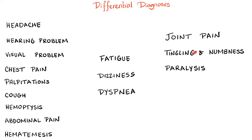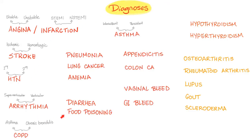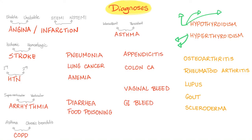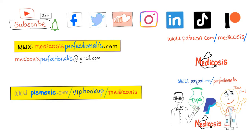You also need to know each individual diagnosis by heart — everything about angina, infarction, strokes (ischemic and hemorrhagic), hypertension (primary and secondary), arrhythmias (supraventricular and ventricular), COPD, asthma, chronic bronchitis, pneumonia, lung cancer, anemia, appendicitis, colon cancer, diarrhea, food poisoning, vaginal bleed, GI bleed, hypothyroidism and hyperthyroidism, osteoarthritis, rheumatoid arthritis, lupus, gout, and scleroderma. Thank you so much for watching and I'll see you in the next video.